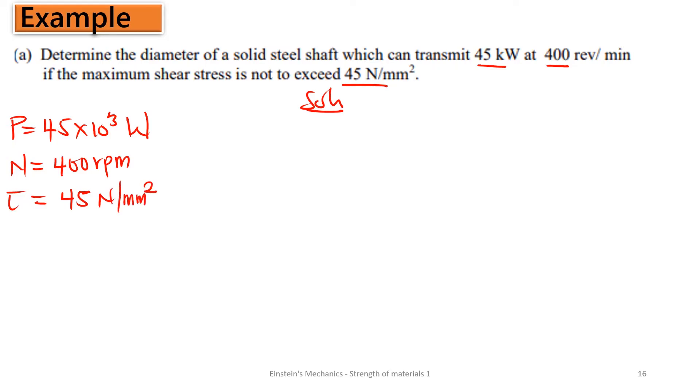The power is 45 kilowatts, and we have the number of revolution, 400 revolution per minute. We are also given the maximum shear stress, which is 45 newton per mm squared. Since we have power and number of revolution, we can now find the torque. We know power is 2 pi NT over 60.